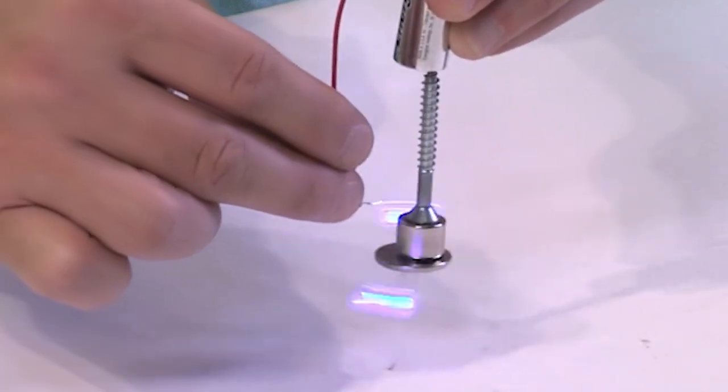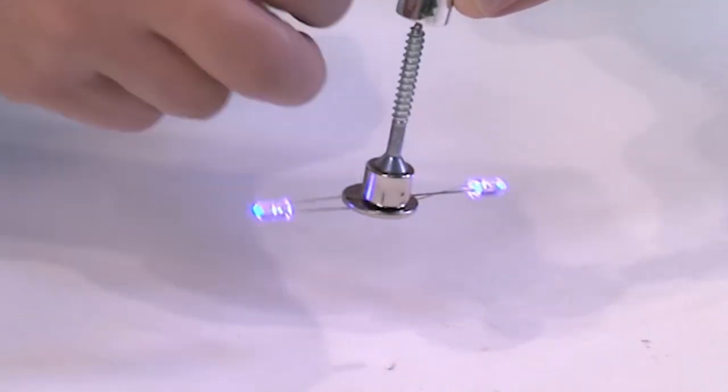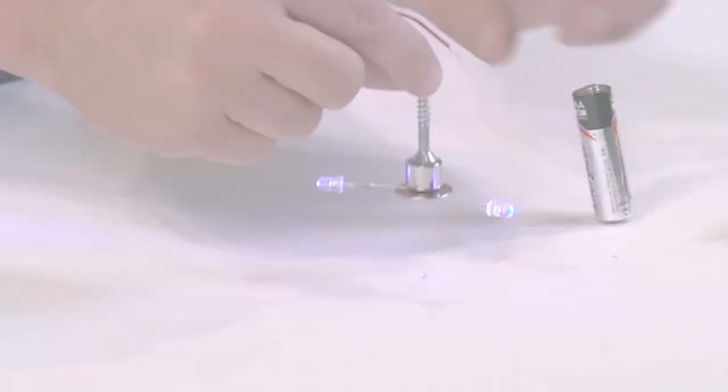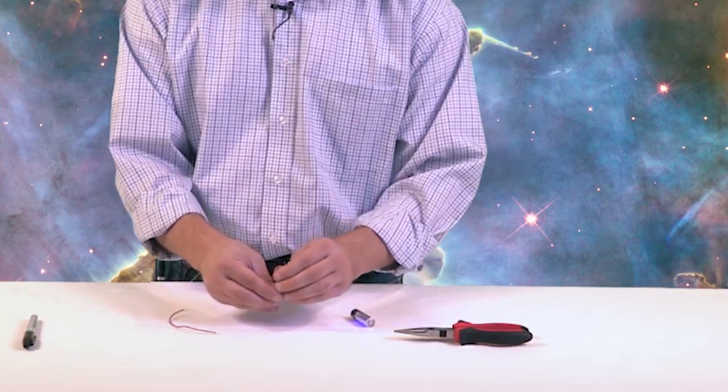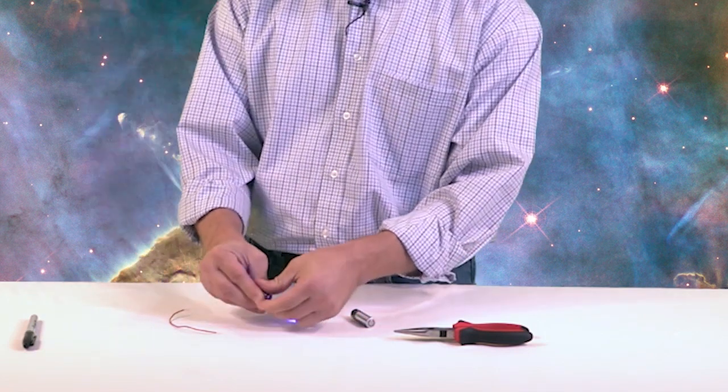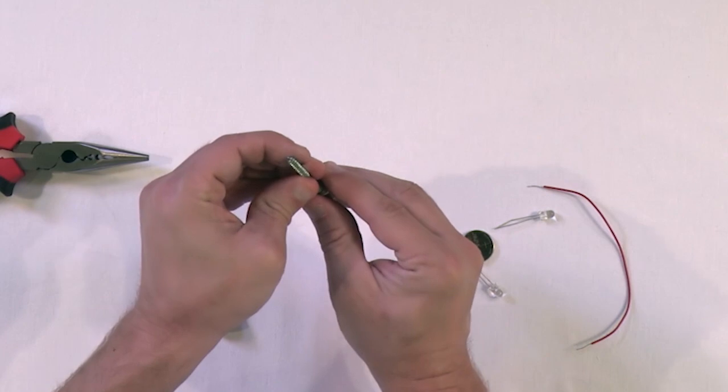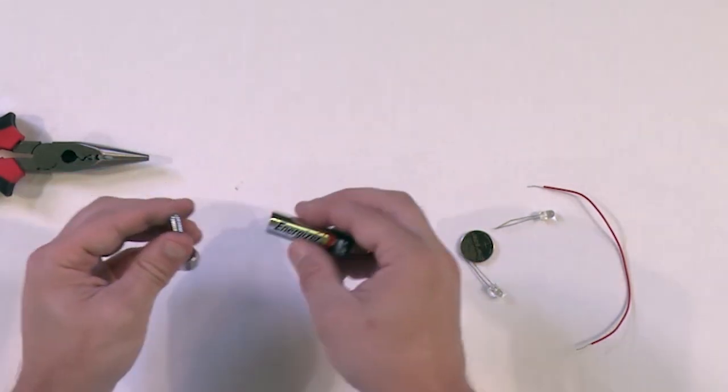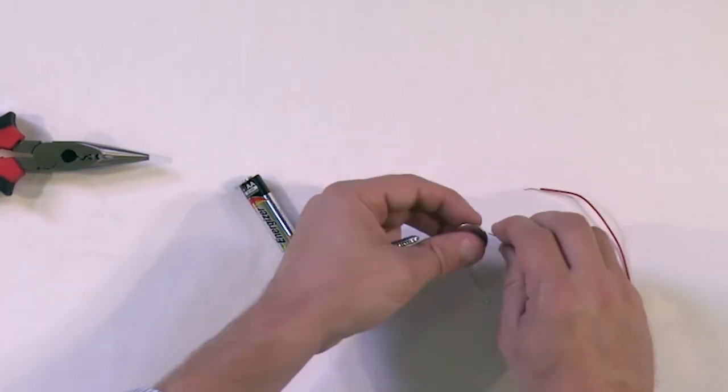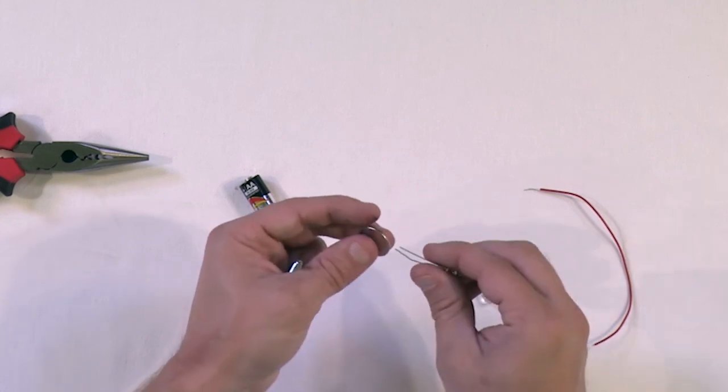So notice the direction this thing is turning right now. When you're looking down, it's turning clockwise. Now let me show you what happens. Since this force that actually pushes the magnet is dependent on the current that's going in the wire and it's also dependent on the magnet, if we flip the magnet over, that's all I've done, flip the magnet over, then what should happen is it should spin the other way. So instead of clockwise, it should spin now counterclockwise.